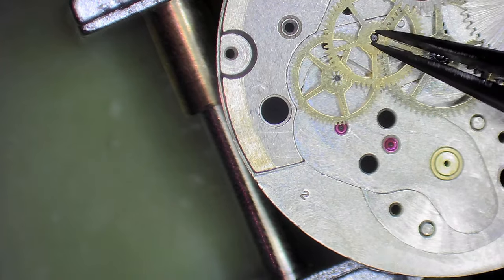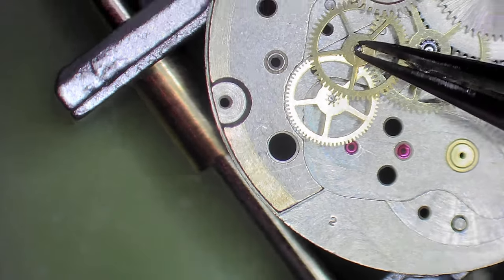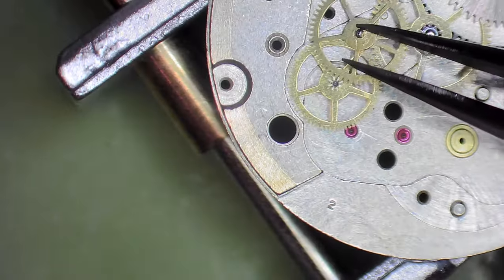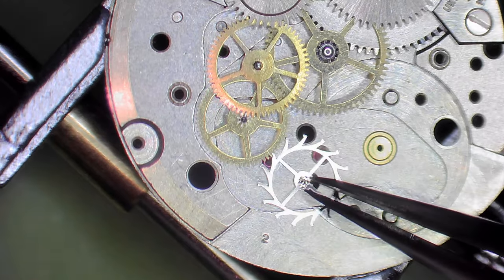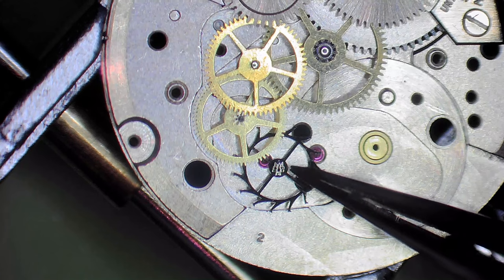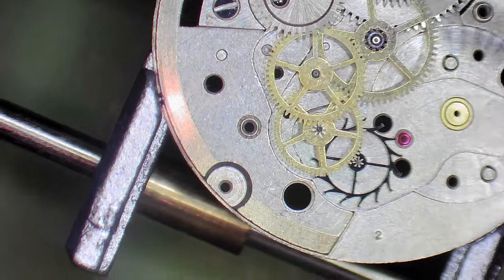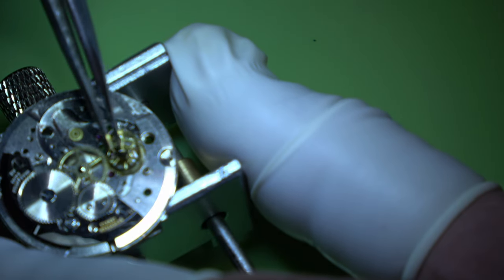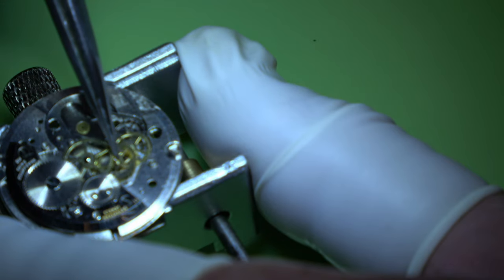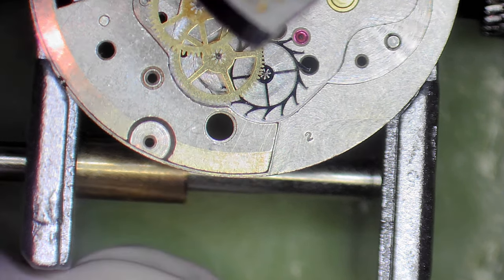It actually needs to go underneath that centre wheel and the ratchet wheel. But we do sort that out in a minute. This can probably be one of the trickiest things to do. Here's the train wheels. We'll pop in the escape wheel.